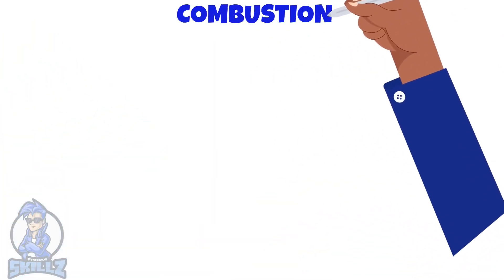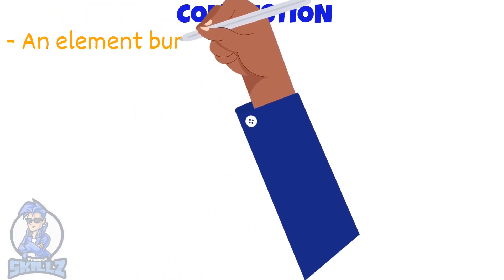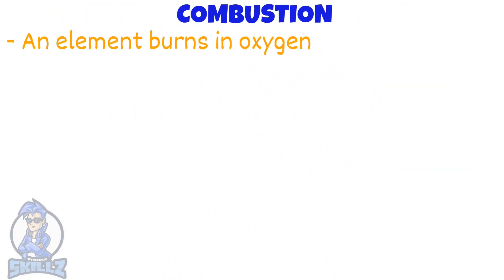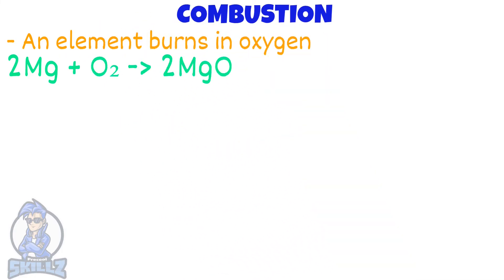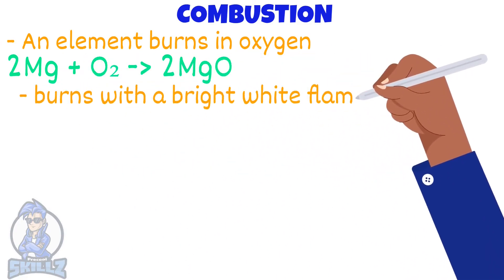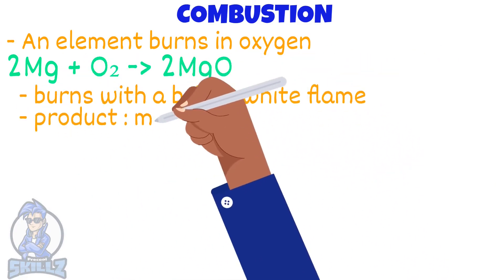A combustion reaction is where an element burns in oxygen. Let's look at some examples. Here's the equation of the reaction between oxygen and magnesium. Magnesium burns in oxygen with a bright white flame. The product is magnesium oxide, a white powder.